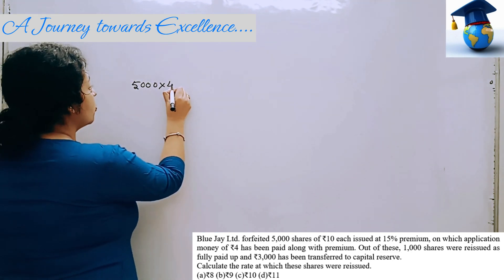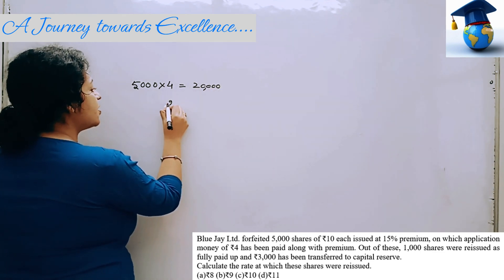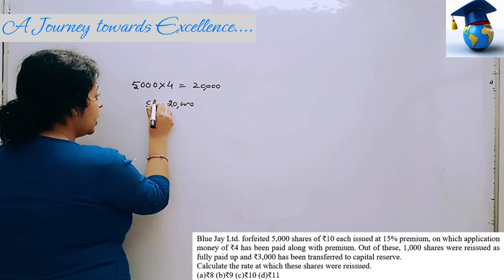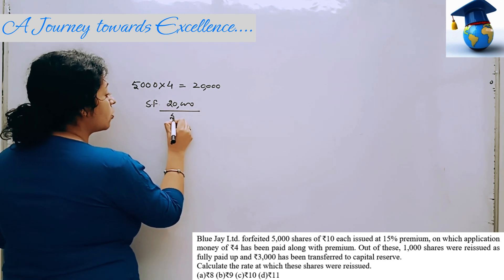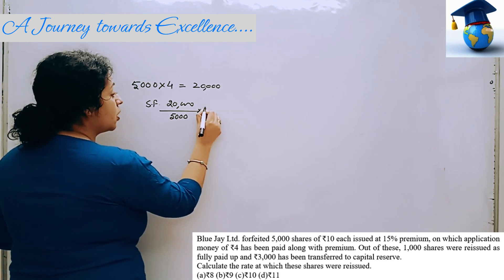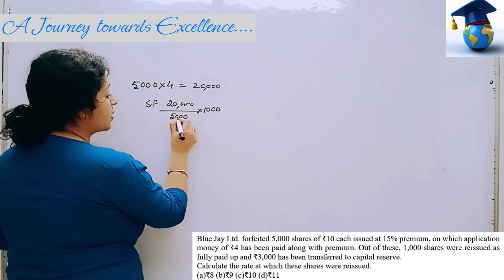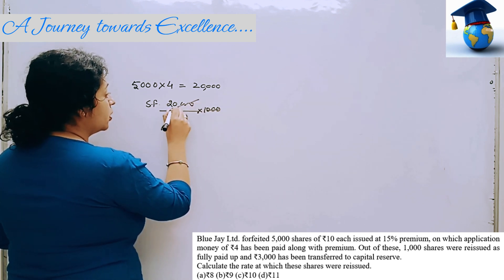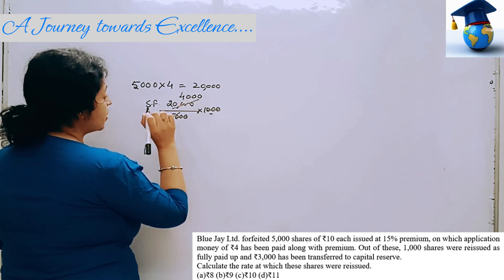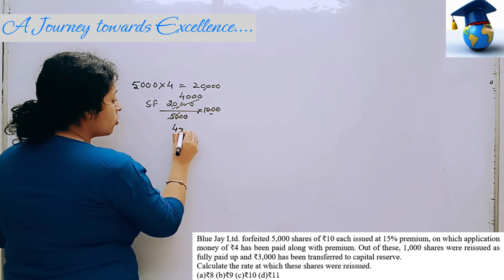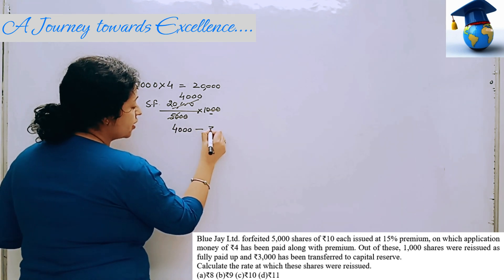Out of 5,000 shares, we are only receiving 1,000 shares. If we are receiving 1,000 shares, we can check that it is only Rs.4,000 in the share forfeiture account — we are only receiving Rs.4,000 in the share forfeiture account.